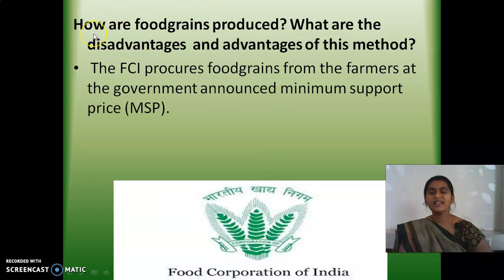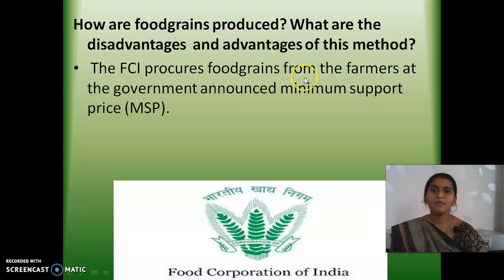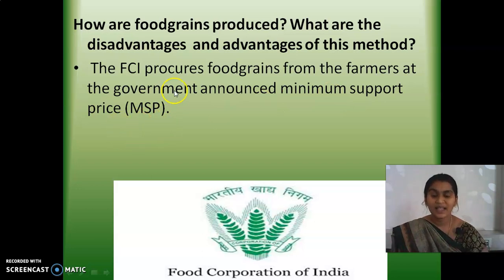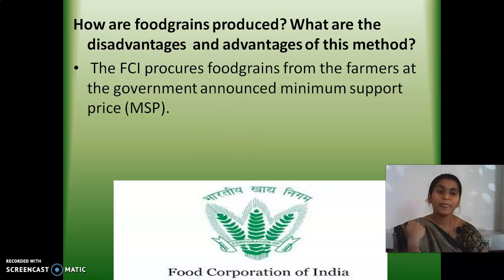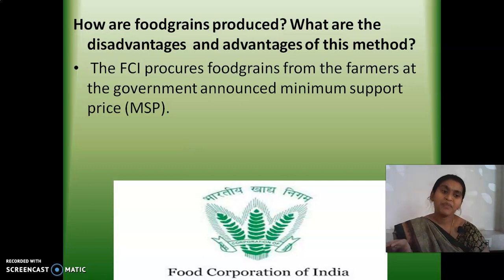How are food grains procured, and what are the advantages and disadvantages of this method? The Food Corporation of India procures food grains from farmers at the government-announced minimum support price. The Food Corporation of India purchases the crops from the farmers — the producers — and stores them. It purchases by paying the minimum support price which has been fixed by the government.